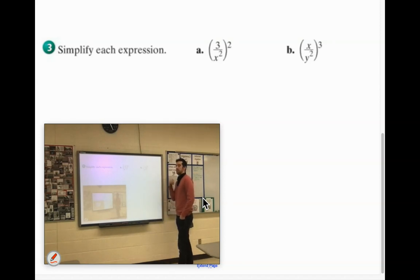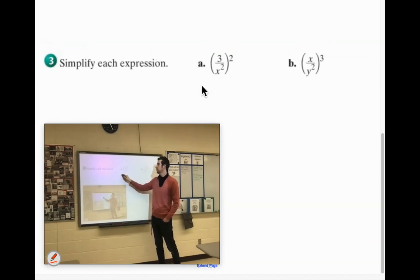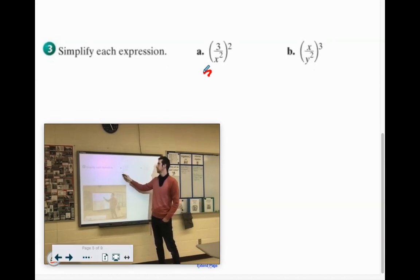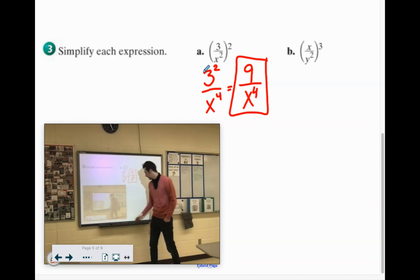All right. 3 over x squared raised to the second power. We need to give that second power to everything. So it'll be 3 squared over x, 2 times 2 is 4. And then we can clean up 3 squared. 3 times 3 is 9. So 9 over x to the fourth.